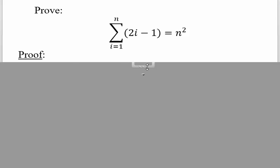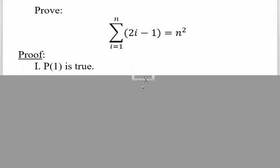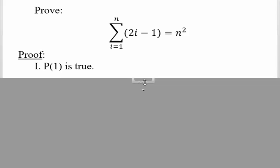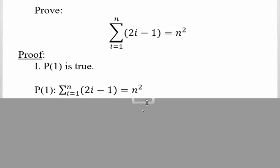We always start our proof with the word proof. A math induction proof has three parts: Roman numeral 1, Roman numeral 2, and Roman numeral 3. Roman numeral 1: you establish that P(1) is true. This is usually pretty easy.